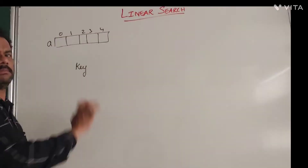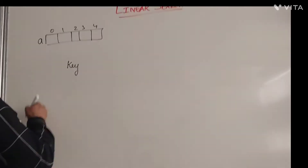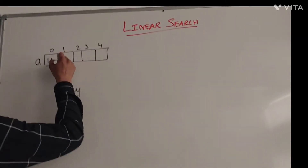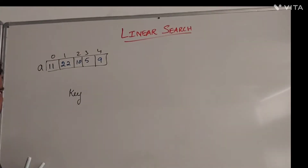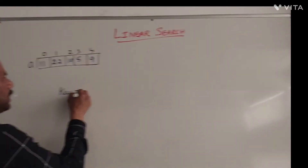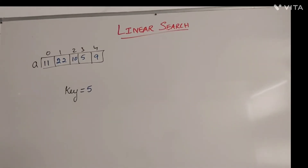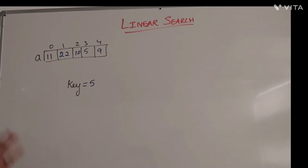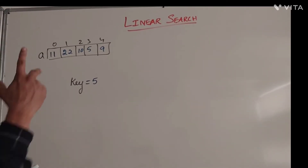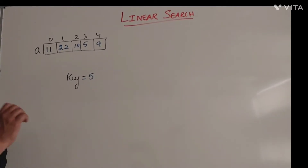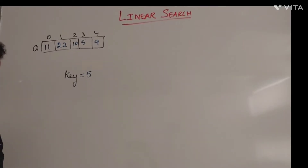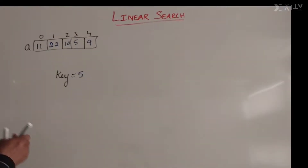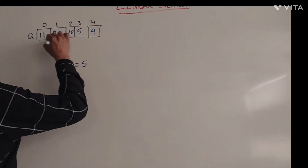For example, let us take the elements: eleven, twenty-two, ten, five, nine. We need to find whether the number five is present or not. By looking at it we can say yes it is present, but the CPU cannot see and tell — it has to do some process. So what we will do is compare the given key element with the first element.